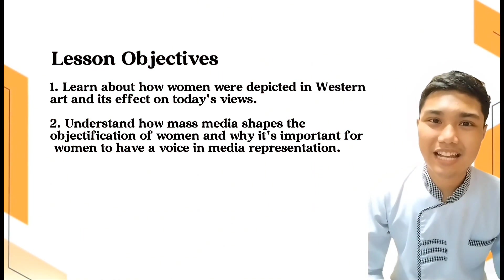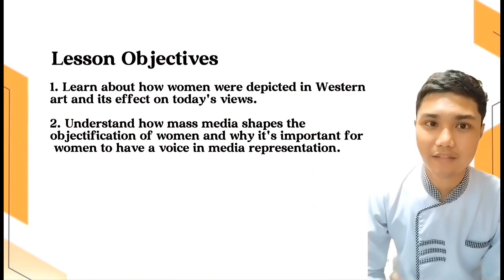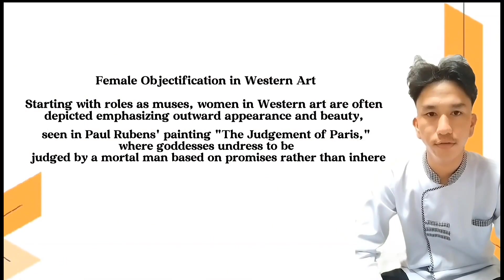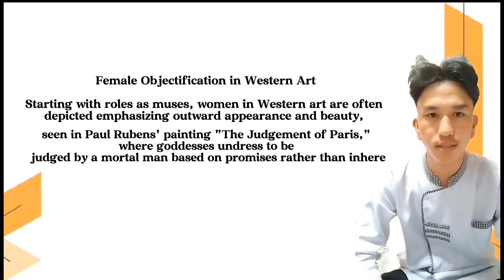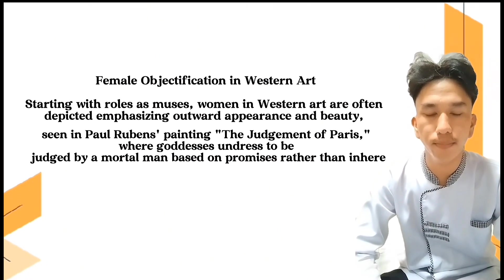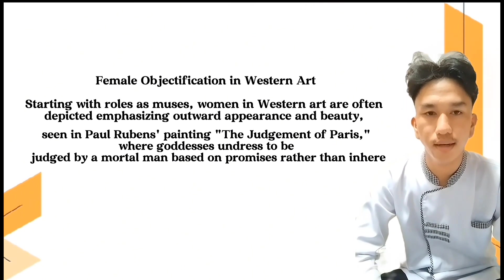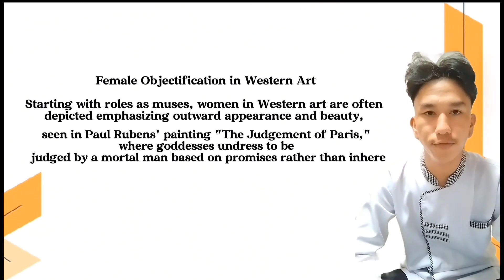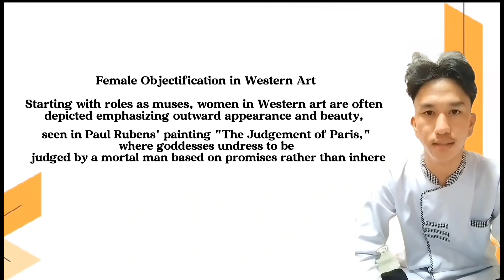These are the lesson objectives. Female Objectification in Western Art: In Western art, women have often been portrayed in ways that objectify them, like in Rubens' The Judgment of Paris, reinforcing societal views of female subservience and beauty ideals.